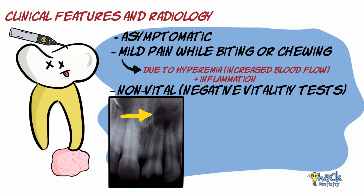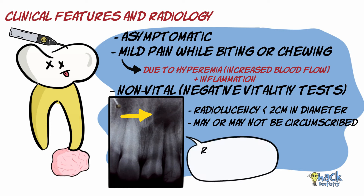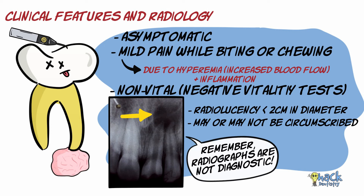Periapical granulomas are usually diagnosed during routine radiography. They are radiolucencies which are typically less than 2 cm in diameter, or may be bigger occasionally. They may or may not be well circumscribed and are situated closely in association with the affected tooth. However, radiographs are not diagnostic of periapical granulomas, as it is difficult to differentiate them from periapical cysts or abscesses or any other periapical lesion showing a unilocular radiolucency.